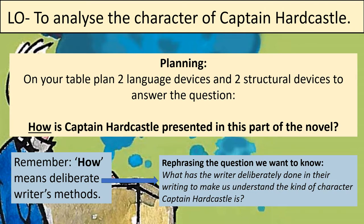In your workbook you've got a really helpful table on page 56. I'd like you to use that table to plan two language devices and two structural devices — spotting them and thinking about their effect — to answer this question: how is Captain Hardcastle presented in this part of the novel? Remember, 'how' means deliberate writer's methods. You're going to pick two language devices and two structural devices to answer that question. What has the writer deliberately done to make us understand the kind of character Captain Hardcastle is? You're going to find two language techniques and two structural techniques that show us he is the antagonist.